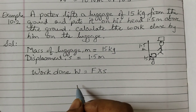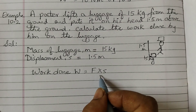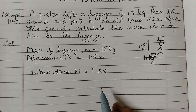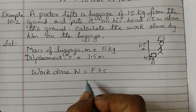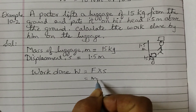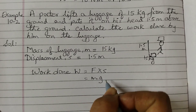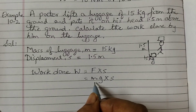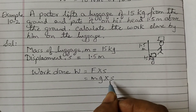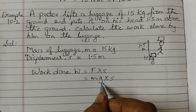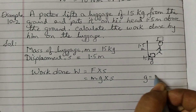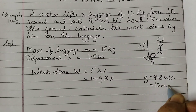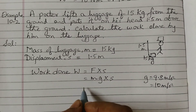The formula for work done is force into displacement. Here the force is not given, but we know that force equals mass into acceleration. Here we will take the acceleration due to gravity, so it becomes mg — mass into acceleration due to gravity into displacement. The value of g is actually 9.8 meters per second squared, but for calculation purposes we will take 10 meters per second squared.